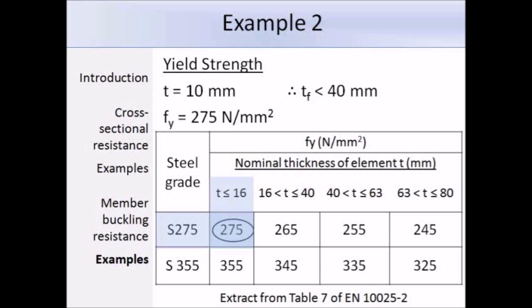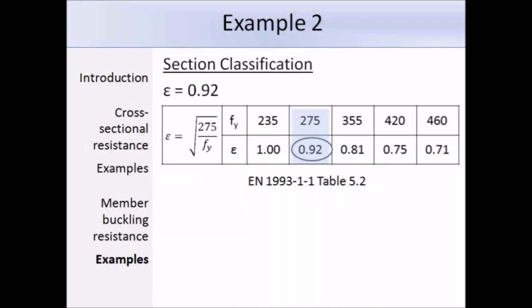At the bottom of table 5.2 we have the values for epsilon. We have determined that the yield strength fy is equal to 275 N/mm², so the corresponding value of epsilon is 0.92.